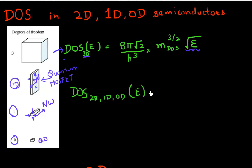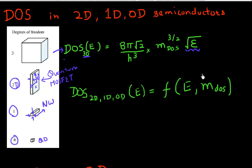In this video, I want to find out the density of states equation — specifically the functional dependence of the density of states on energy and on the density of state mass for two-dimensional, one-dimensional, and zero-dimensional systems. So let's dive in.